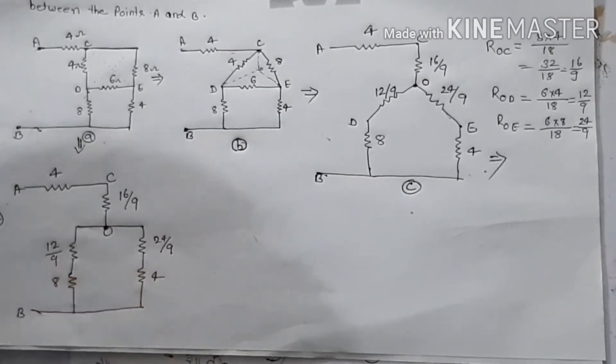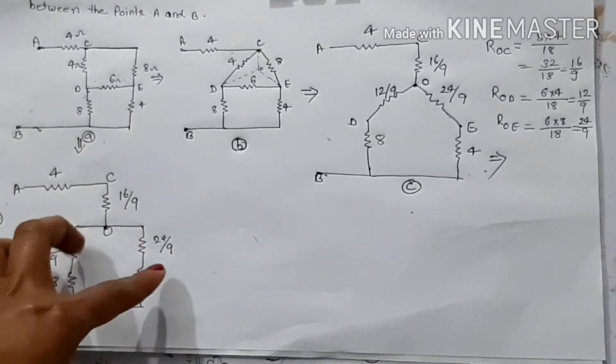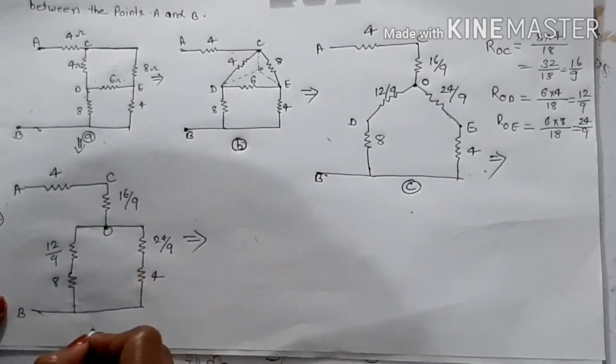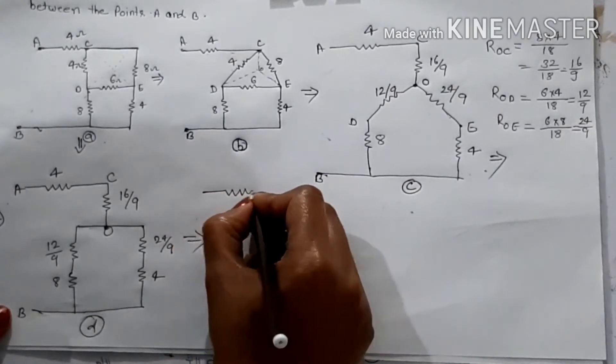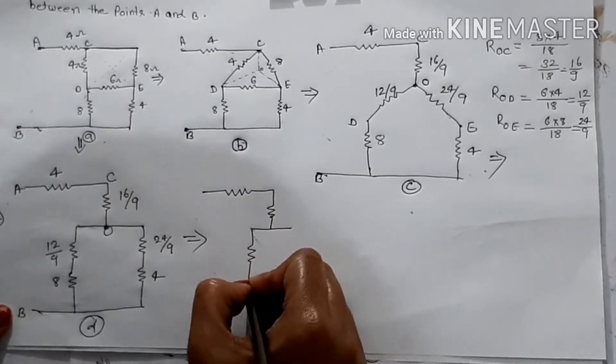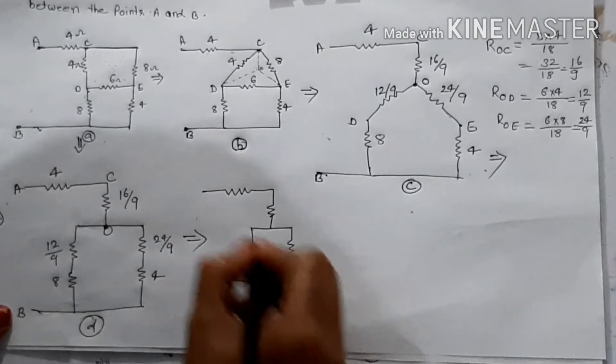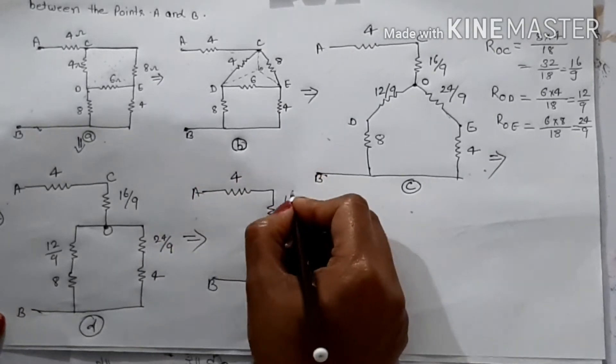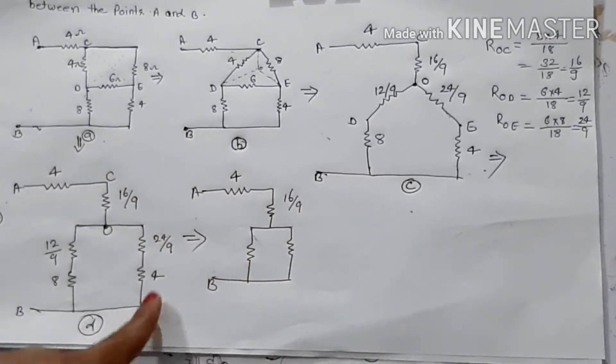Now this resistance is parallel, then this is equivalent resistance, this is figure number D. Then this is the same resistance, simple add, after addition, 24 upon 9 plus 4.